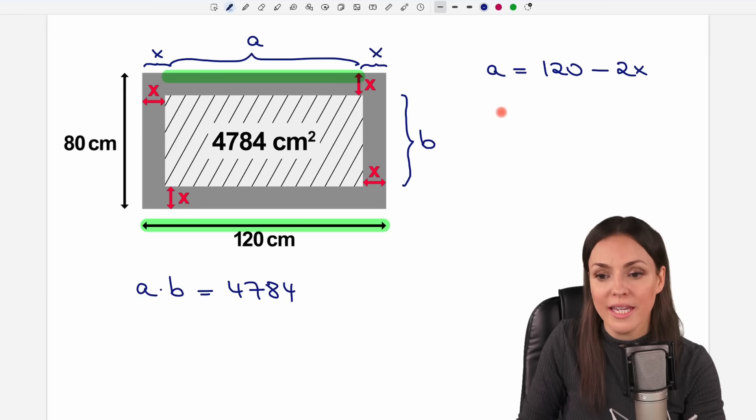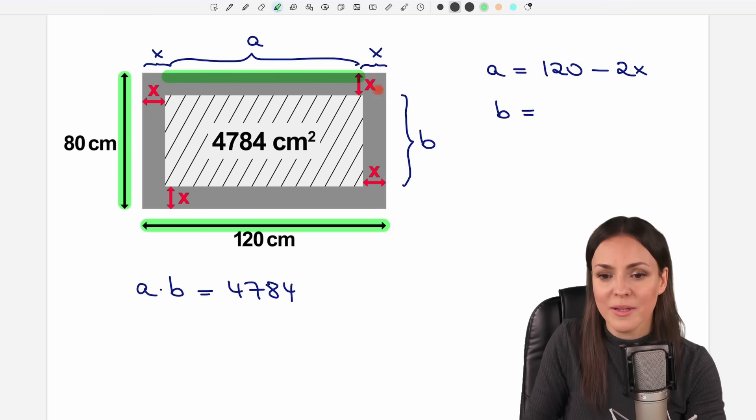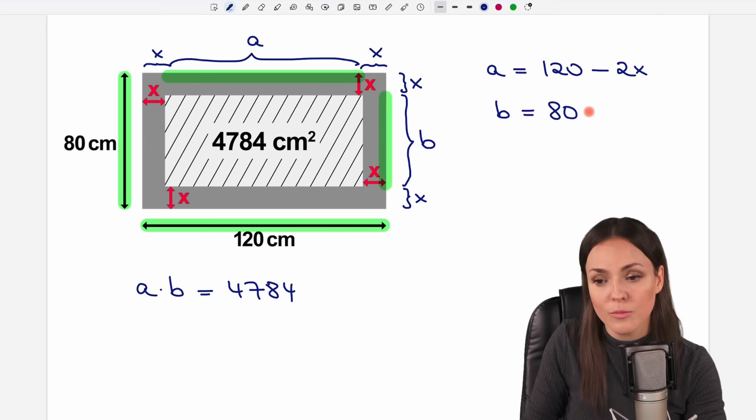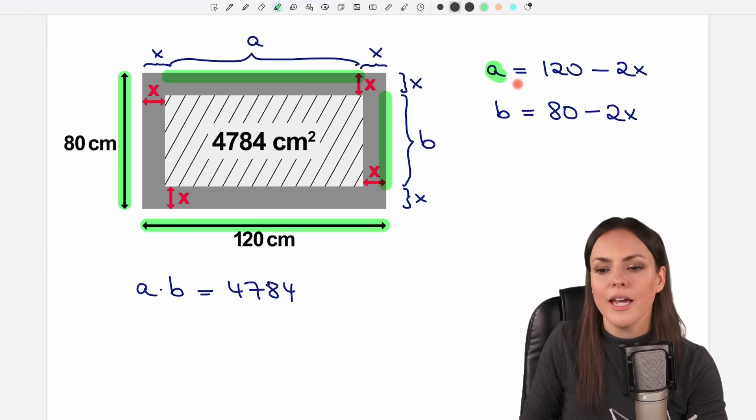Let's do the same with our B. B equals what do we have here? We have the entire side but then we also have these small pieces here which is x and also here we have x. So our B equals the entire side so 80 but this would be too long. We subtract x and x so also here we subtract 2x. Now we found an expression for A in terms of x and we found an expression for B in terms of x.